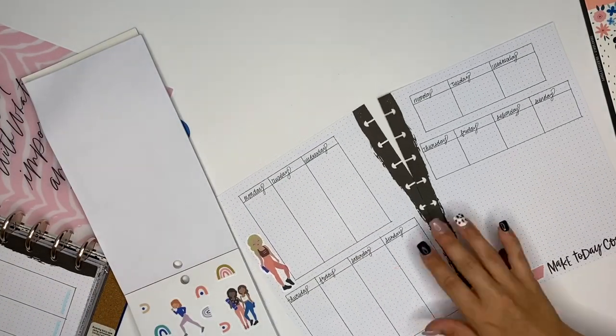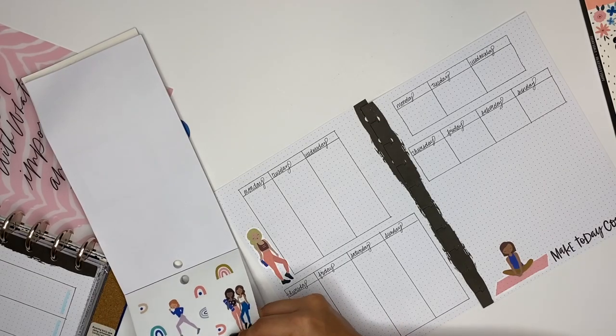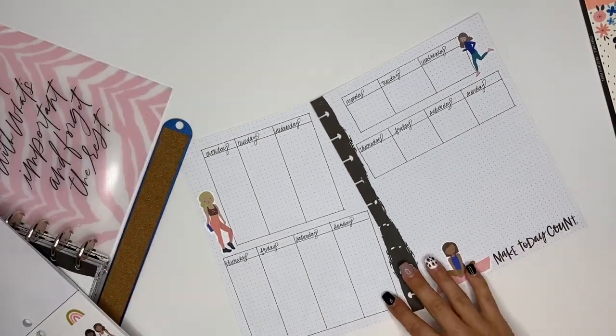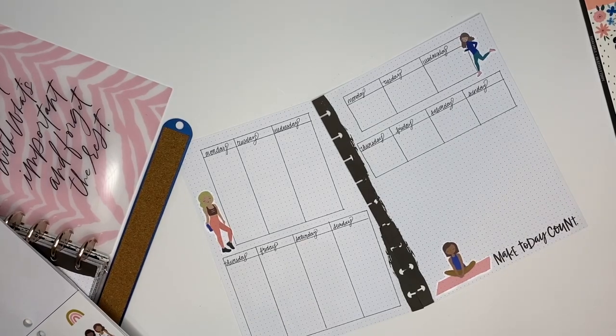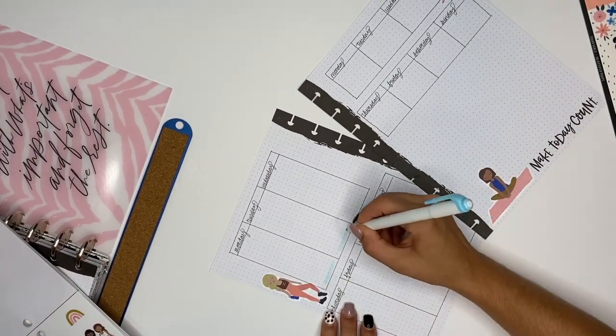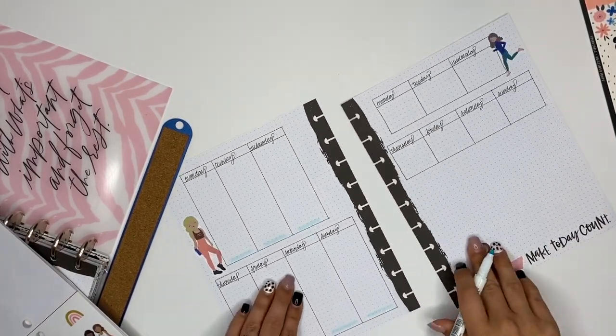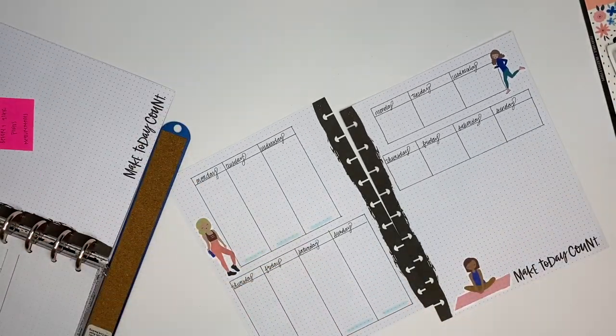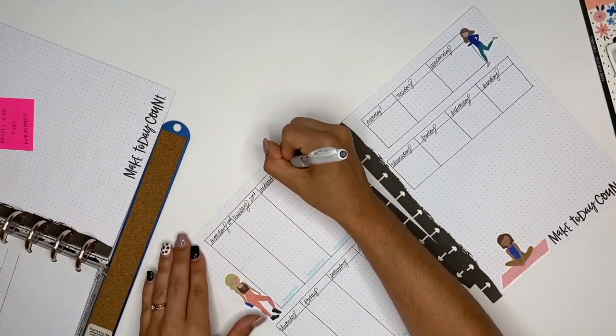And so I'm using a blue Mildliner and I'm putting lines on the bottom on the nutrition side, and this is where I will write out how much water I have each day.